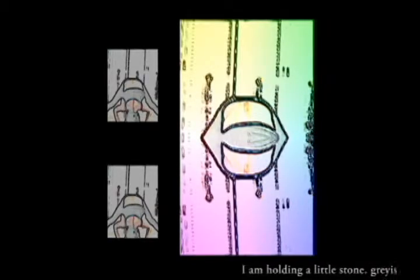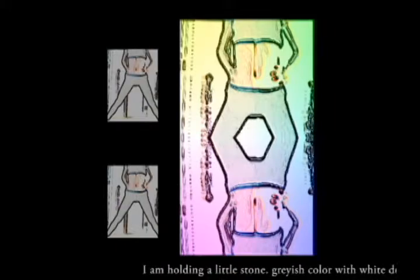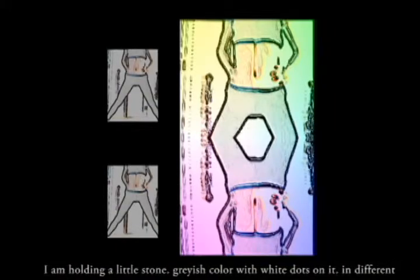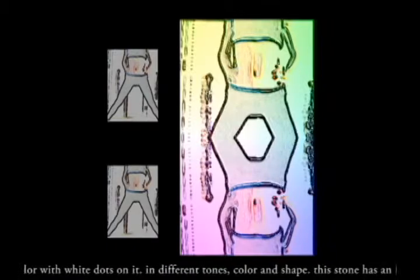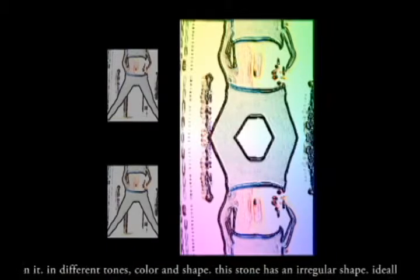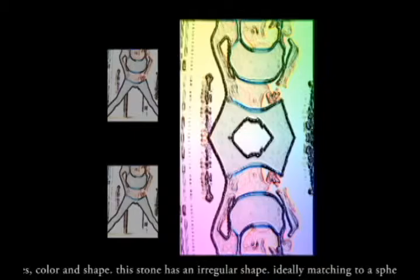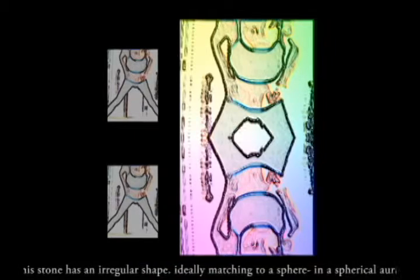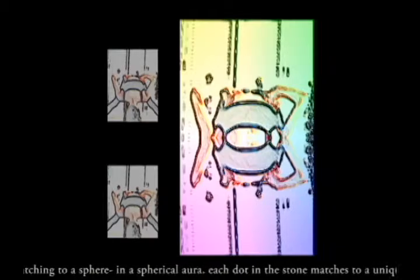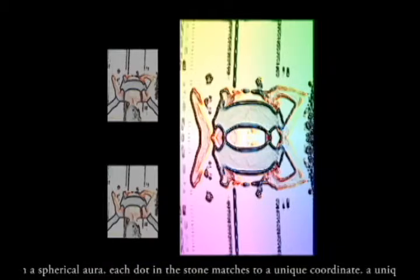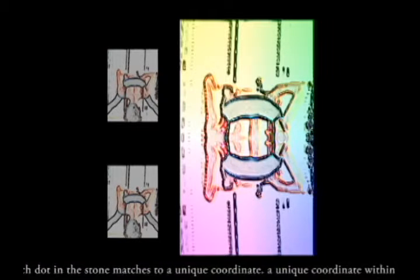This is my project. I'm holding a little stone, a grayish color with white dots on it in different tones. This stone is in an irregular shape, ideally matching to a sphere.